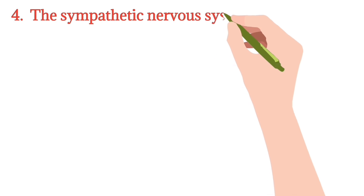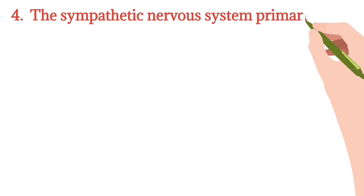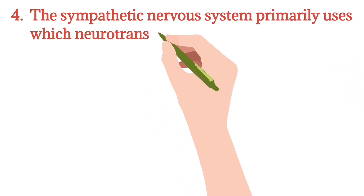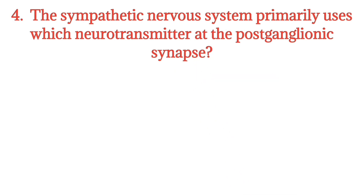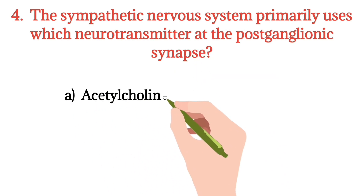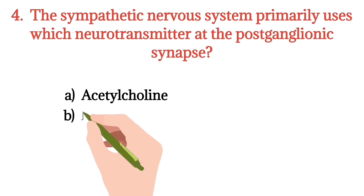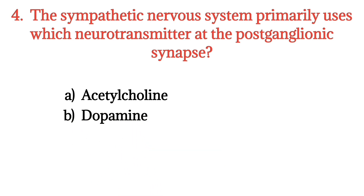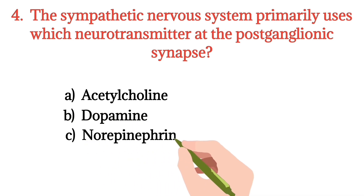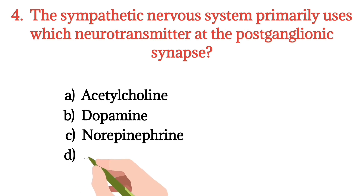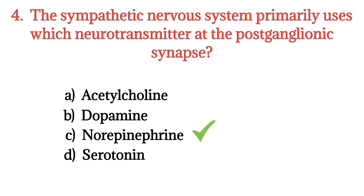MCQ number 4. The sympathetic nervous system primarily uses which neurotransmitter at the post-ganglionic synapse? Option A: Acetylcholine. Option B: Dopamine. Option C: Norepinephrine. Option D: Serotonin. The right option is Option C.